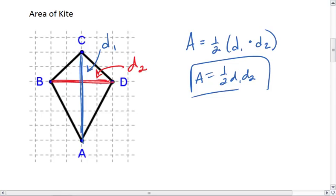To do that, I'm going to focus on one diagonal, D1, which divides our kite into two triangles. Then we'll find the area of each triangle.